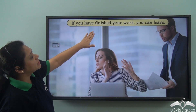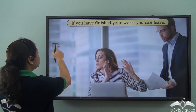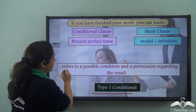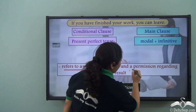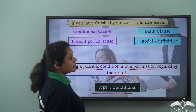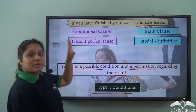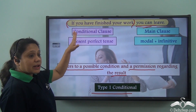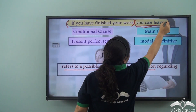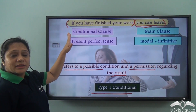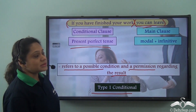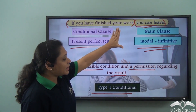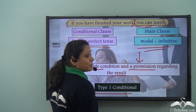'If you have finished your work, you can leave.' This is another Type 1 conditional. It refers to a possible condition and a permission regarding the result — 'you can leave.' The conditional clause 'if you have finished your work' is in the present perfect tense, and the main clause has a modal along with a bare infinitive, expressing permission.